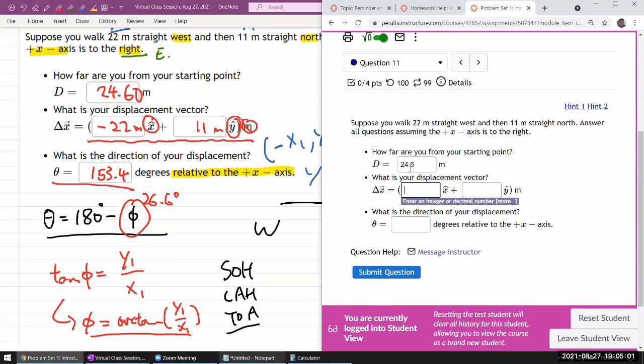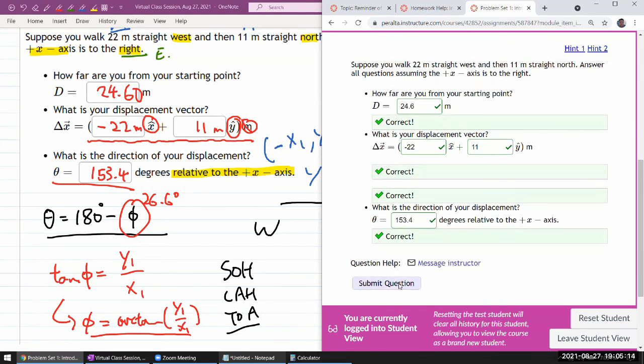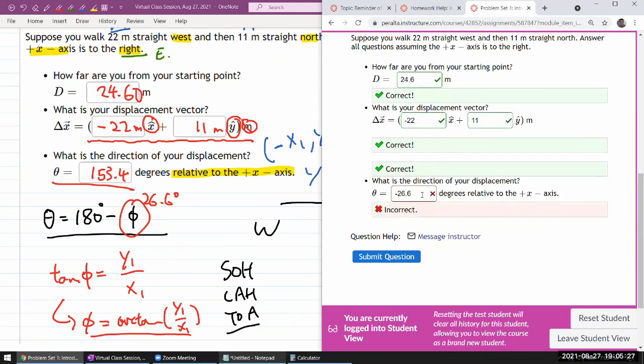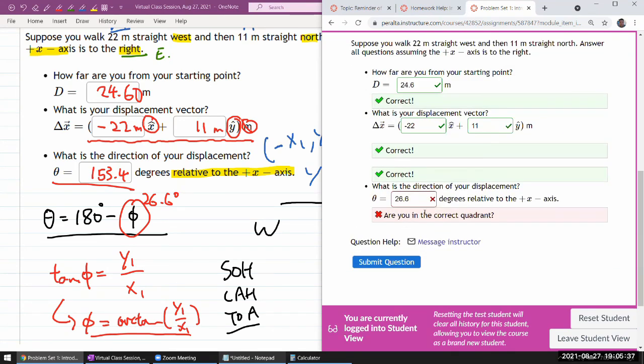24.6, minus 22, 11, 153.4. Good. And let me—oh wait, wait, submit button didn't go away. Okay, let me just try this out. I want to try, what does it say if I do minus 26.6? Does it have a specific feedback? Oh, it doesn't, never mind. Sometimes the feedback will tell you when it looks like you've gotten an answer wrong and it's a kind of small predictable mistake. Sometimes they'll tell you, yeah, are you in the correct quadrant?